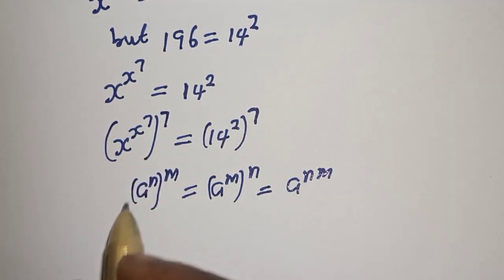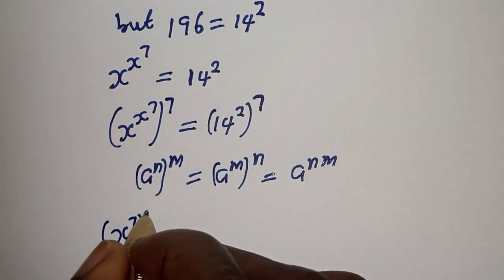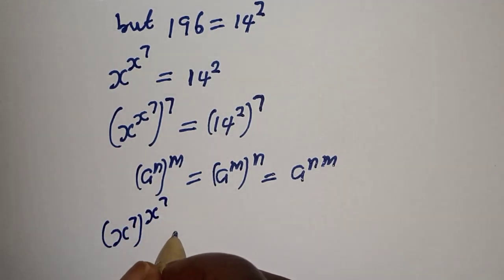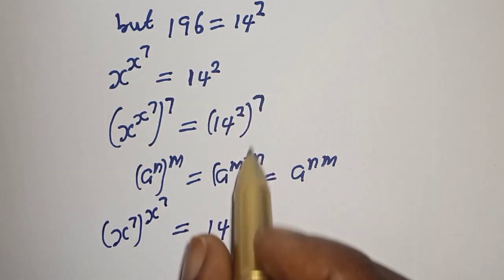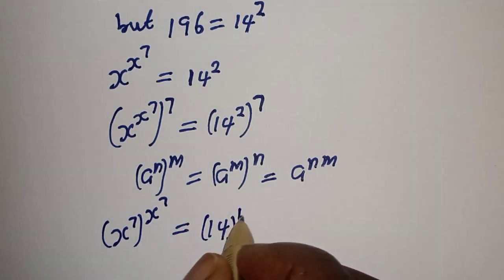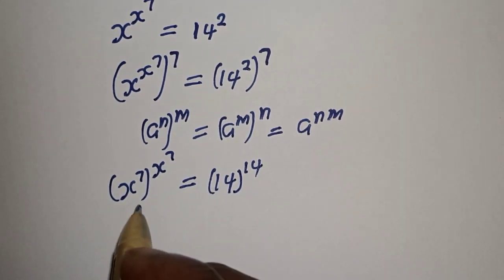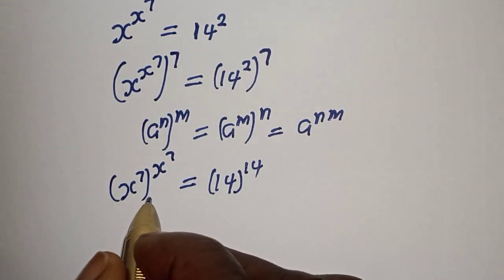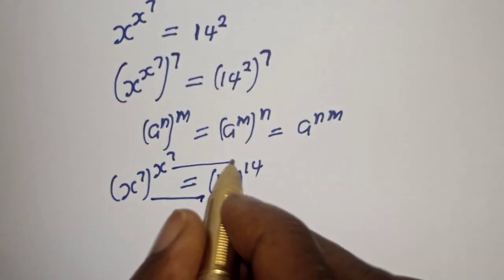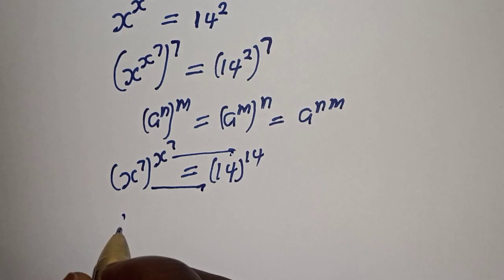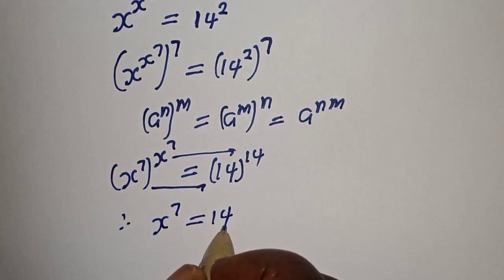Then the left-hand side becomes S raised to power 7 raised to power S raised to power 7, equal to 14 raised to power 2 times 7, that is 14 raised to power 14. So from here, we can see that the base is equal to 14 and the exponent is equal to 14. Therefore, S raised to power 7 is equal to 14.